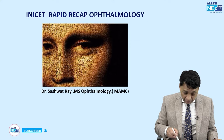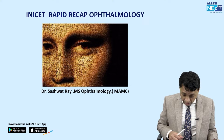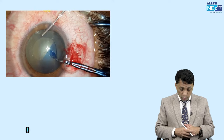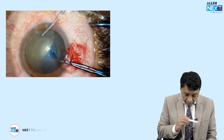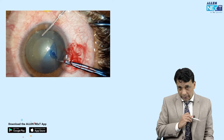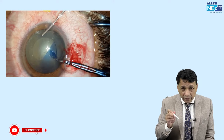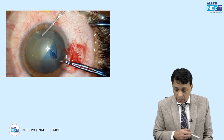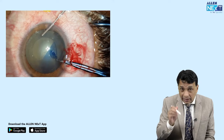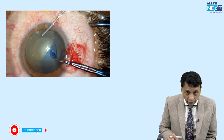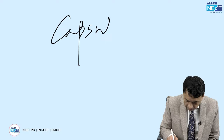We begin with the first question. Look at this image — there is a circle, and there is a bluish thing. This is a question asked repeatedly in recent years in every possible exam — not only finals but NEET PG and FMGE exams also. You have to tell me what this procedure is, and what dye has been used to stain. The answer is: the procedure is capsulorhexis.